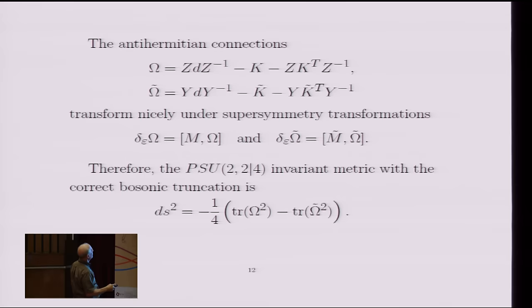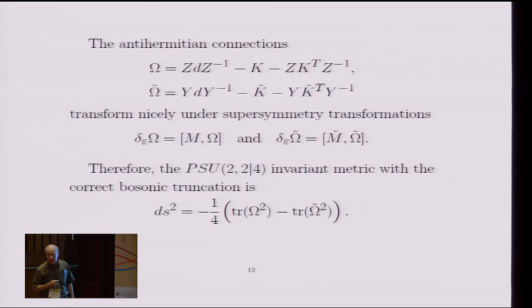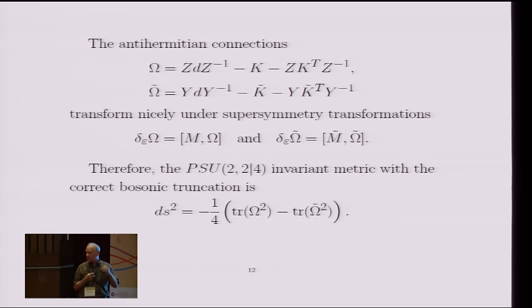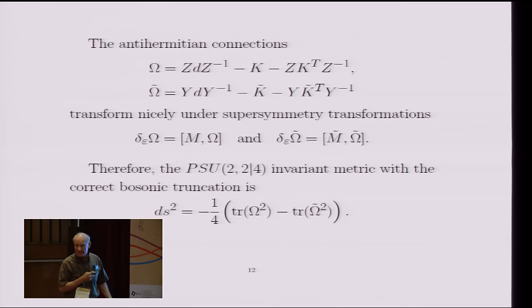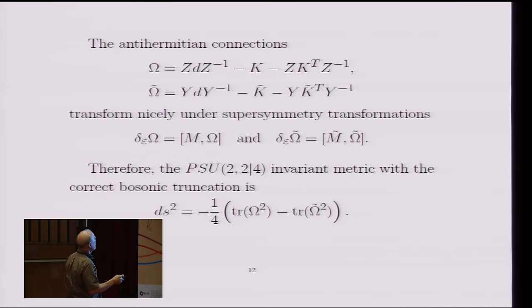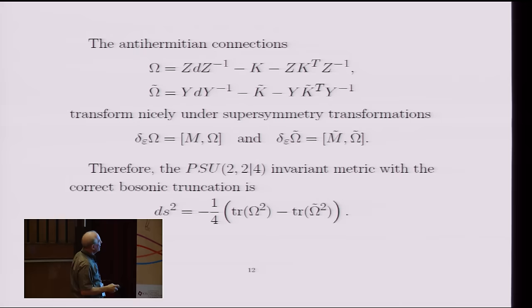And that gives us some one-forms omega and omega tilde. And these things are constructed such that they transform under supersymmetry in this natural fashion as shown here. So I don't even talk about the SU(2,2) and SU(4) transformations because they're all completely manifest in the formalism. Everything has manifest symmetries there. It's only the supersymmetry that we have to be careful to keep track of.